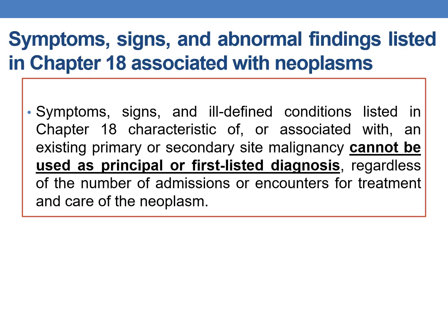Next guideline: Symptoms, signs, and abnormal findings listed in Chapter 18, associated with neoplasm. Symptoms, signs, and ill-defined conditions listed in Chapter 18 that are characteristic of or associated with an existing primary or secondary site malignancy cannot be used as PDX or first-listed diagnosis, regardless of the number of admissions or encounters for treatment or care of the neoplasm.